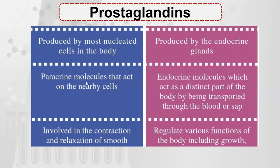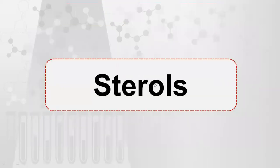Prostaglandins are paracrine molecules — they are produced nearby where they are needed. Hormones are endocrine — they are produced elsewhere and travel via blood or sap to where they are needed. Prostaglandins are involved in the contraction and relaxation of smooth muscles, while hormones regulate various functions like growth.